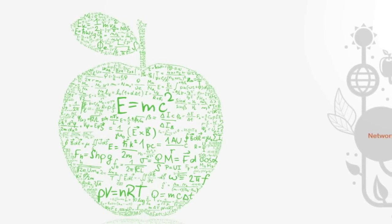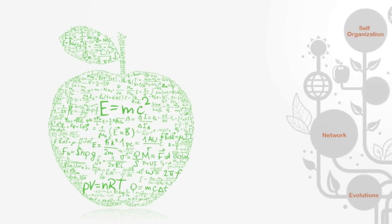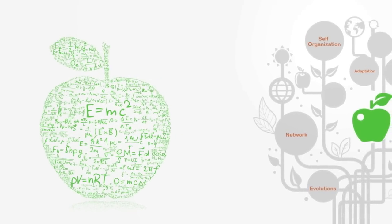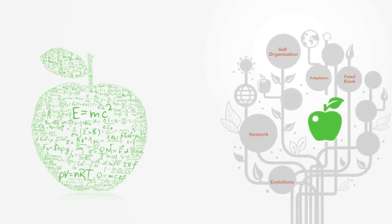Whereas traditional reductionist science primarily uses linear mathematical models and equations as its theoretical foundations, complexity science uses the concepts of complexity theory such as self-organization, network theory, adaptation and evolution.